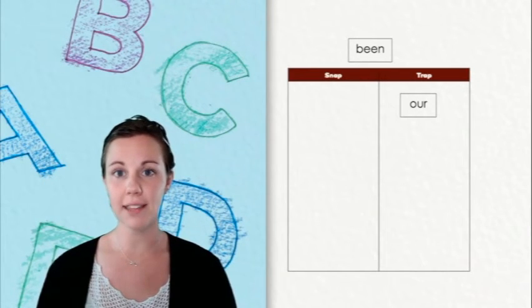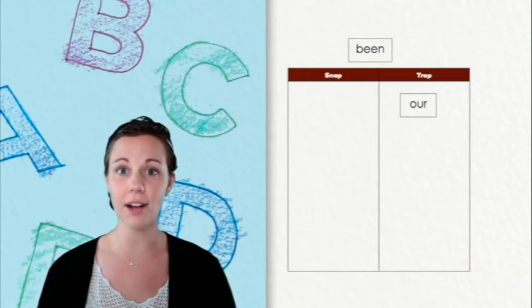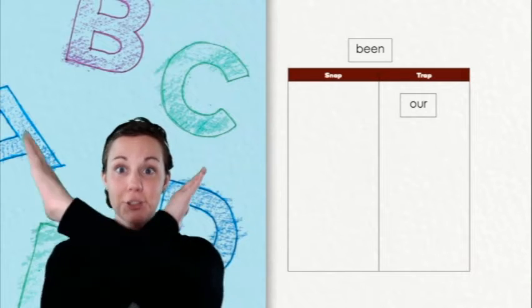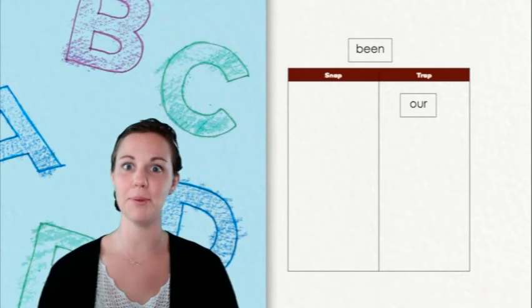When I say the word been, I don't hear a long E, which means this is definitely a trap. Let's put it in our chart.